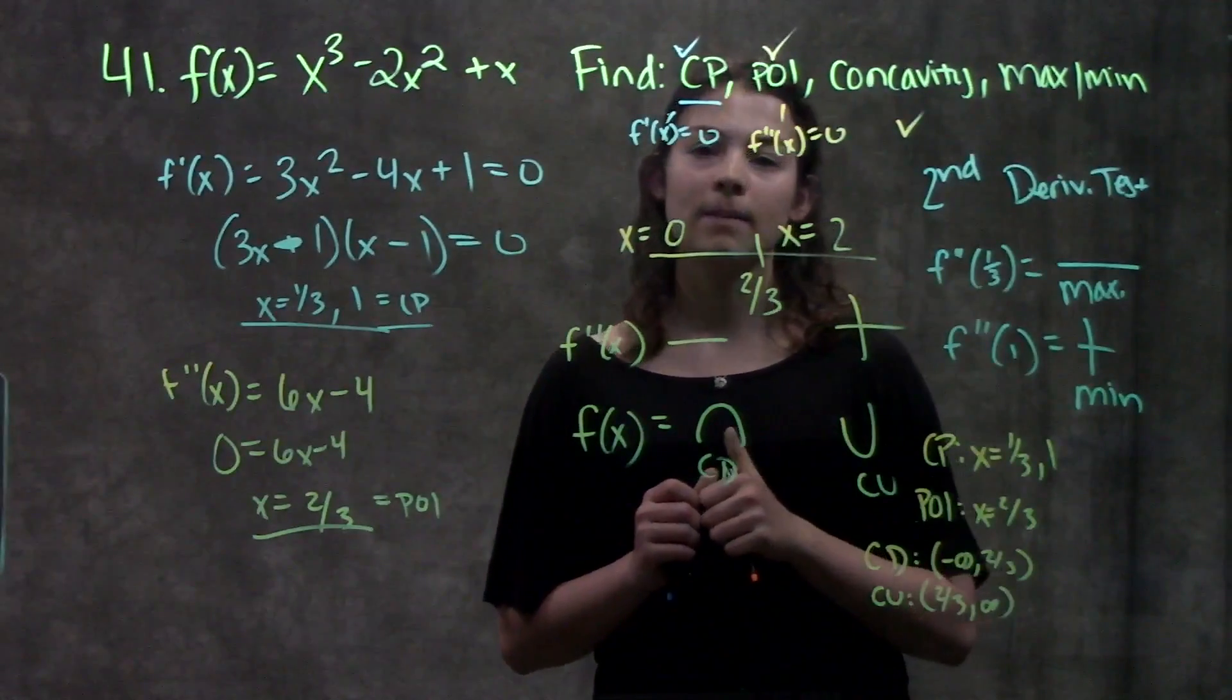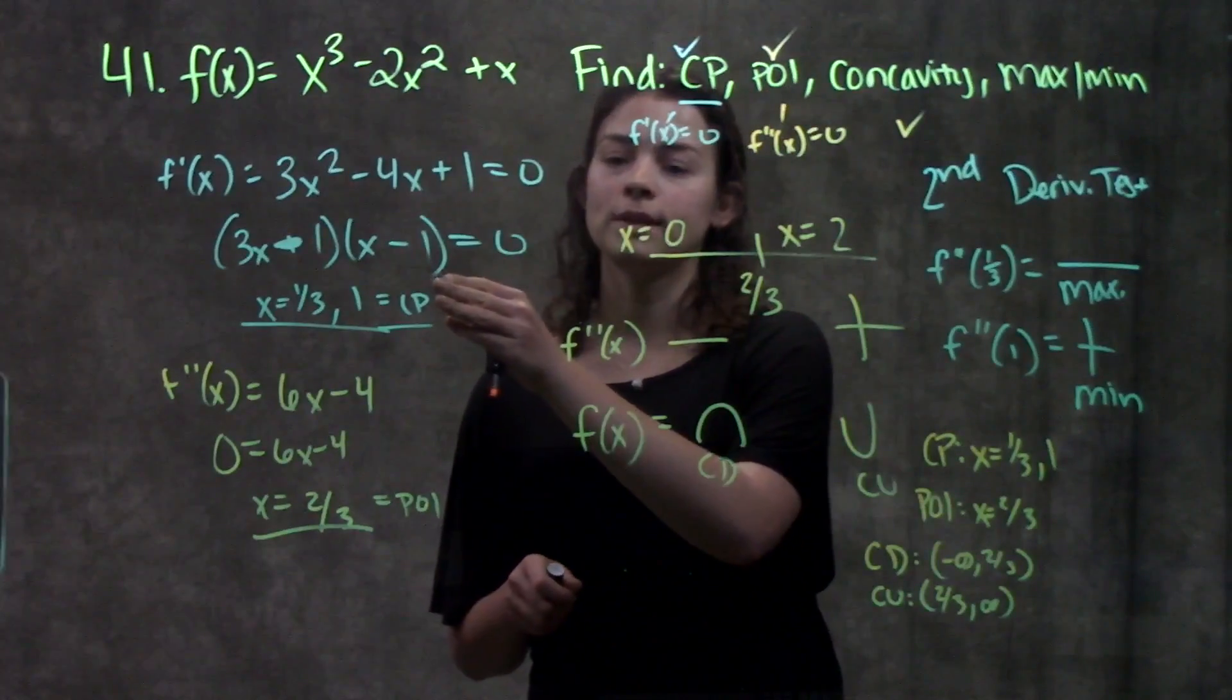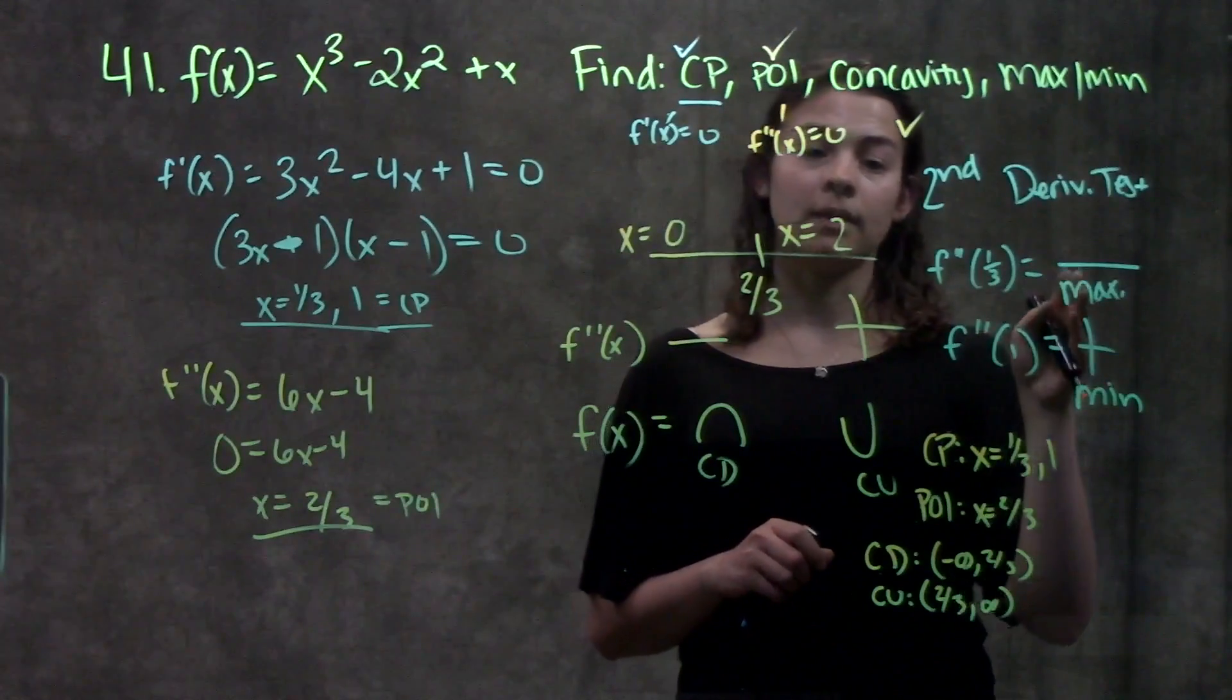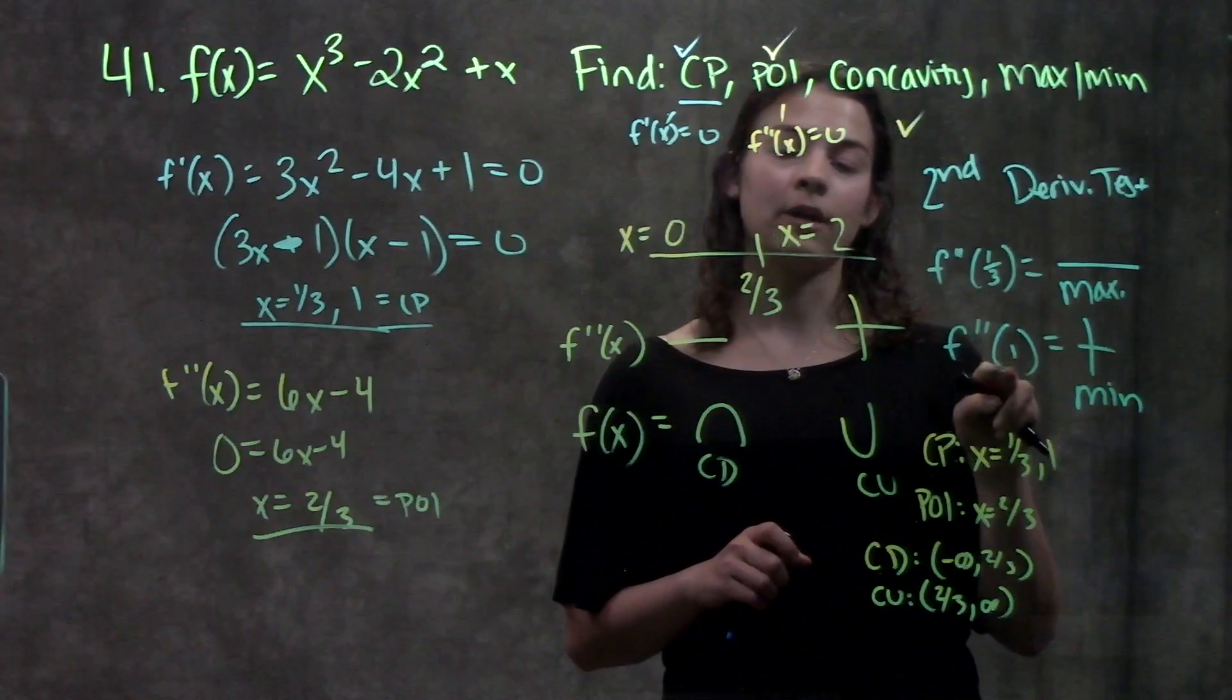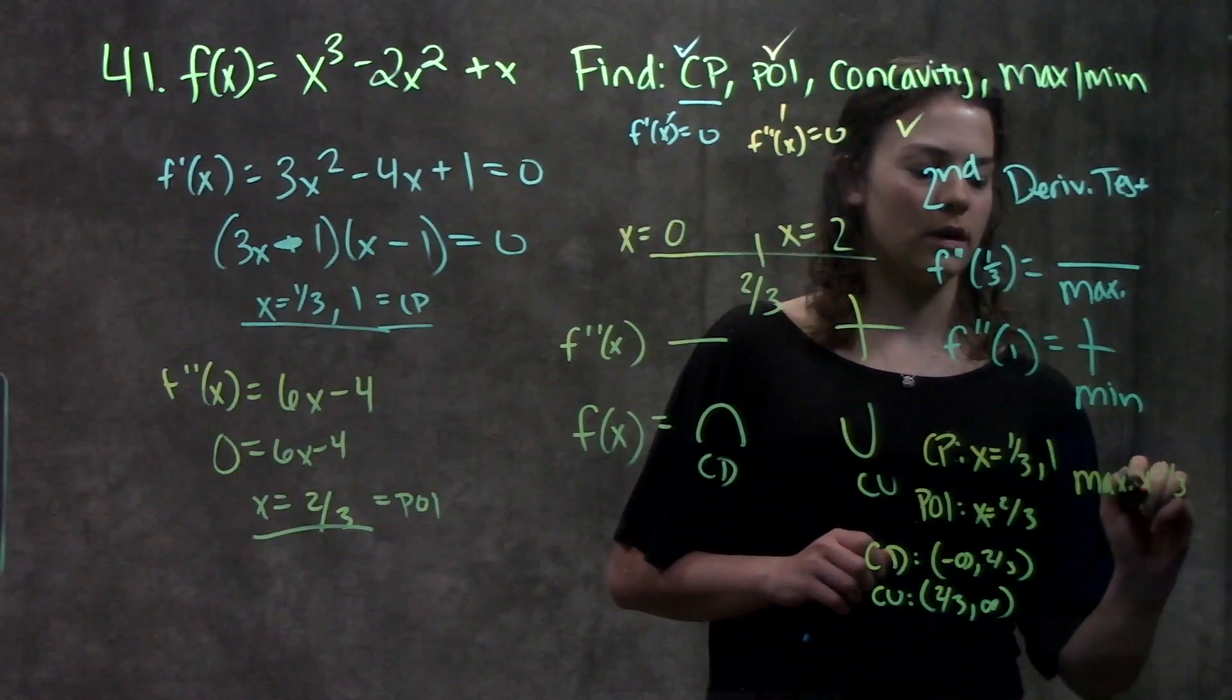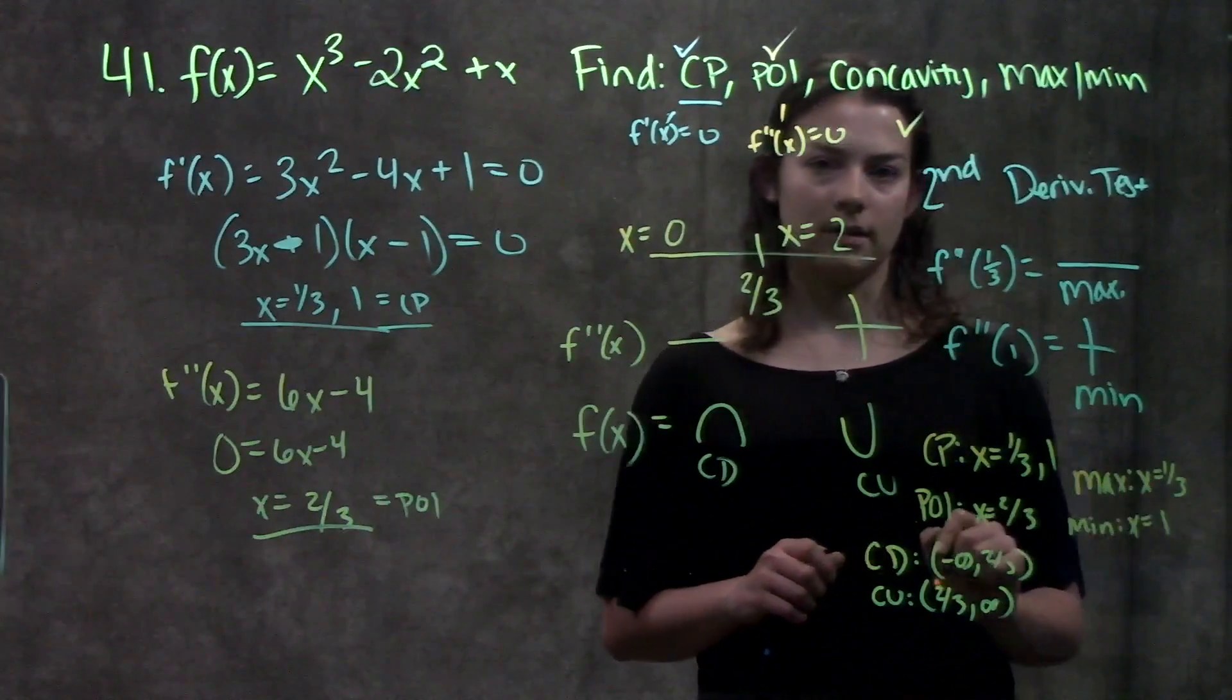And last thing, to find my maxes and mins, I did the second derivative test. And I plugged my critical points into my second derivative and looked at the sign. Remember, if I did that and I got a negative, that meant that that critical point is a maximum. And if I got a positive, that meant that that critical point is a minimum. So when I did that, I got that my max is at x equals 1 third and my minimum is at x equals positive 1.